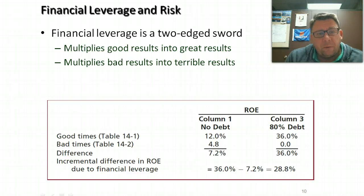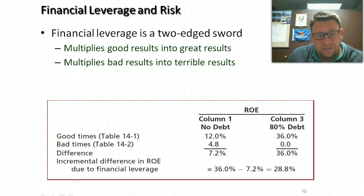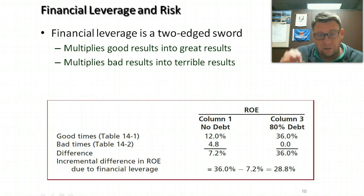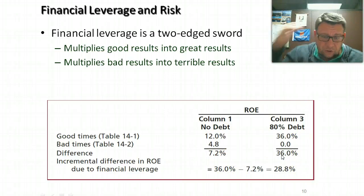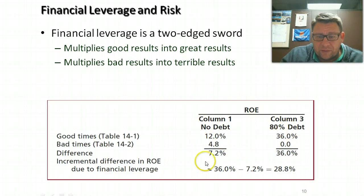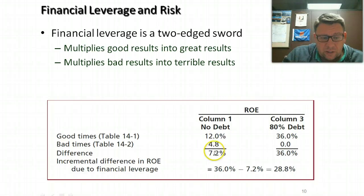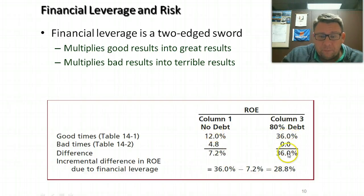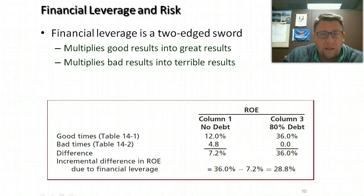Financial leverage is a double-edged sword. When we have good results, we can take them and turn them into great results, but it can also take bad results and turn them into terrible results. Look at the swing we could possibly have: when we had no debt, our ROE range was 4.8% to 12%. But when we have a lot of debt, it was 0% to 36%. That is a big change from being levered versus not levered.